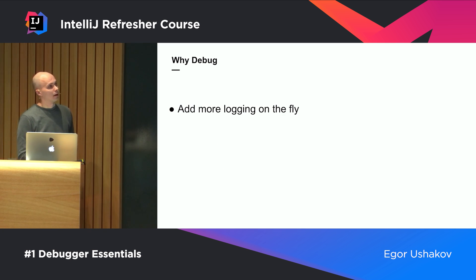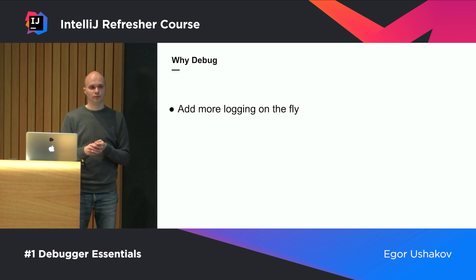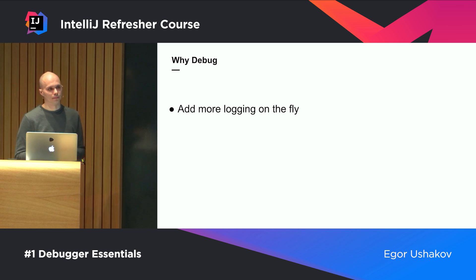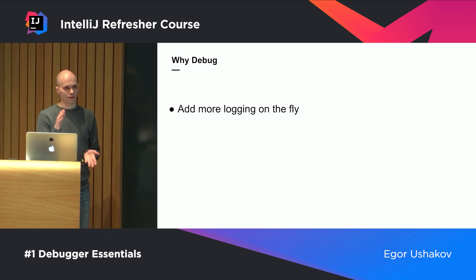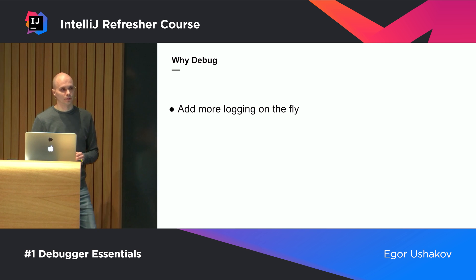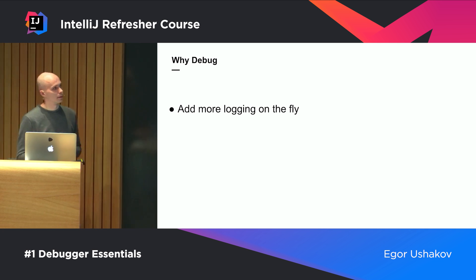With regular source code, if you need logging you must add logging statements, recompile, rerun, reproduce the problem, then see the log. With the debugger, you can do that on the fly without restarting the application, recompiling it, or even changing the source code. You can add any logging information at any place in the source code and see the data appearing as you run it.